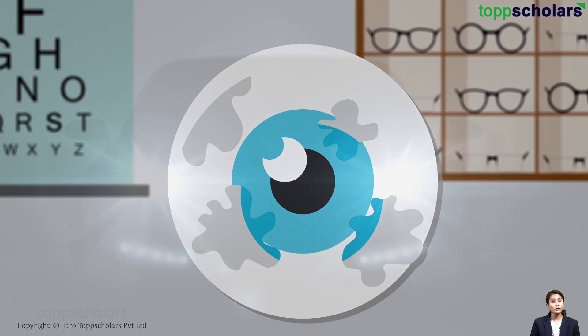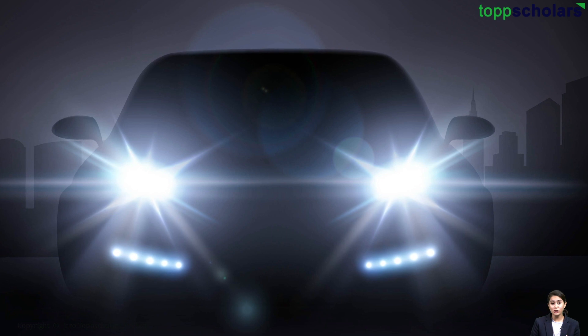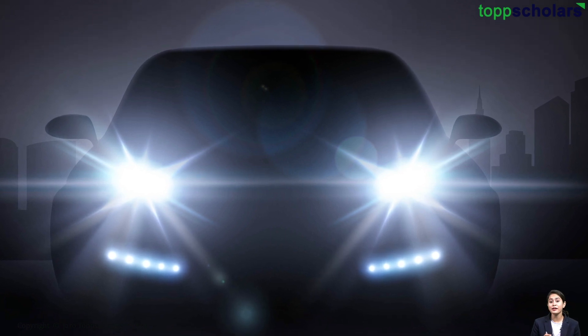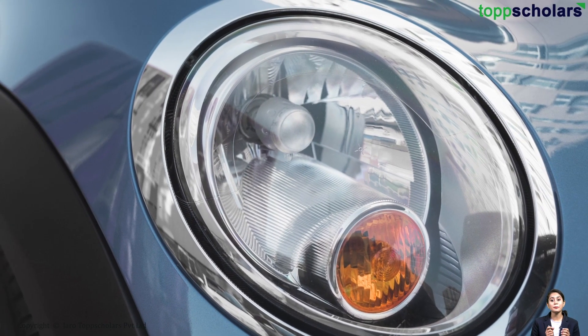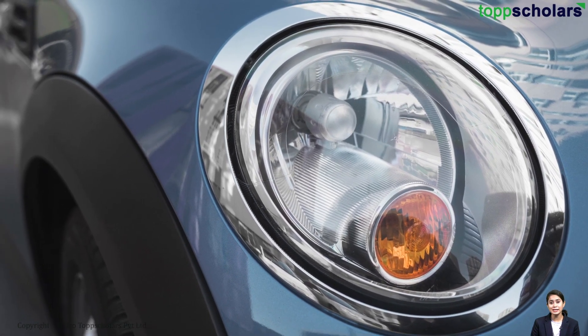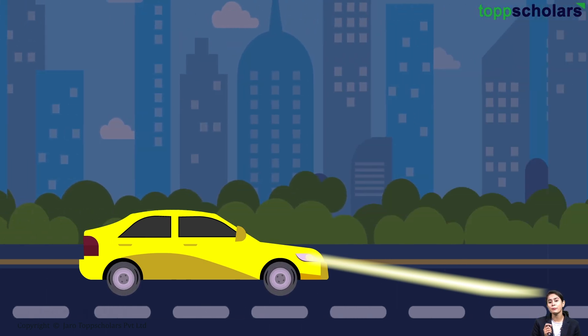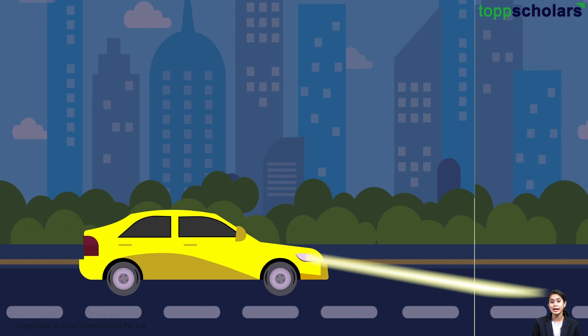Concave mirrors are also used in automobiles and motor vehicle headlights, torch lights, etc. as reflectors. The source of light is placed at the focus of the mirror. So, after reflecting, the light rays travel over a huge distance as parallel light beams of high intensity.